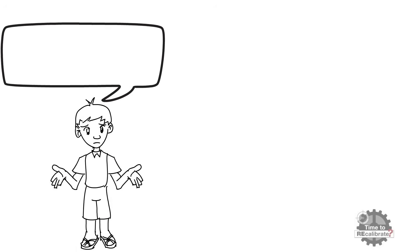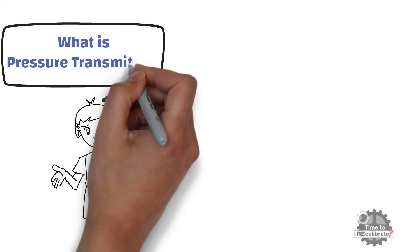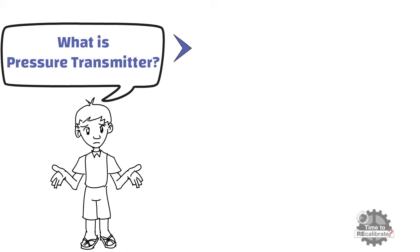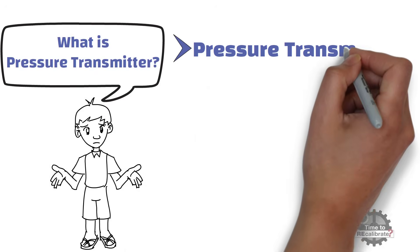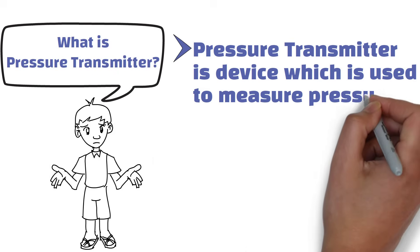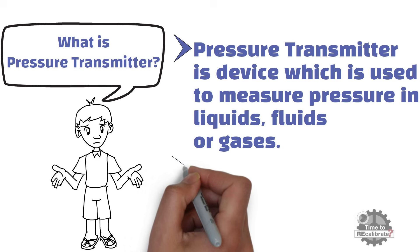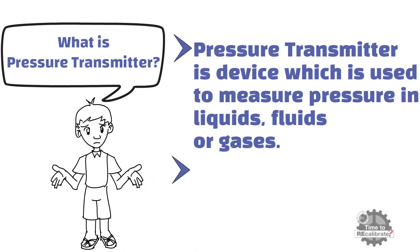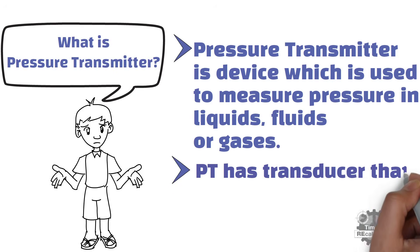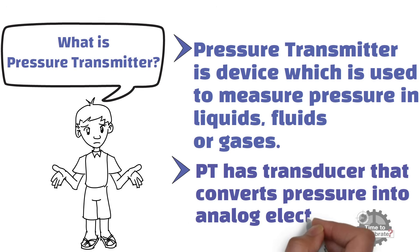First of all, what is a pressure transmitter? A pressure transmitter is a device which is used to measure pressure in liquids, fluids, or gases. A pressure transmitter has a transducer that converts pressure into analog electrical signals.